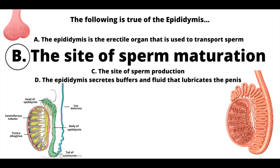Our answer here is B: the epididymis is the site of sperm maturation. The epididymis is a coiled tube that's roughly 20 feet long and it lies on the surface of the testicles inside of the scrotal sac. Sperm cells are stored here until they become mature enough to swim, or to become what we call motile.